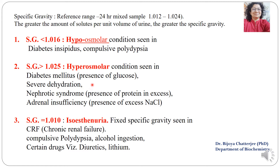Hyperosmolar condition is also seen in severe dehydration, nephrotic syndrome due to excessive proteins in urine, and adrenal insufficiency due to excessive sodium chloride. If specific gravity always remains fixed at 1.010 regardless of water intake, this is known as isosthenuria, seen in chronic renal failure, compulsive polydipsia, alcohol ingestion, or certain drug intakes such as diuretics and lithium.